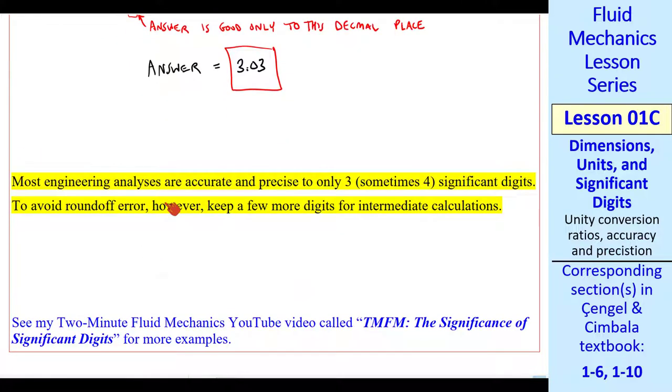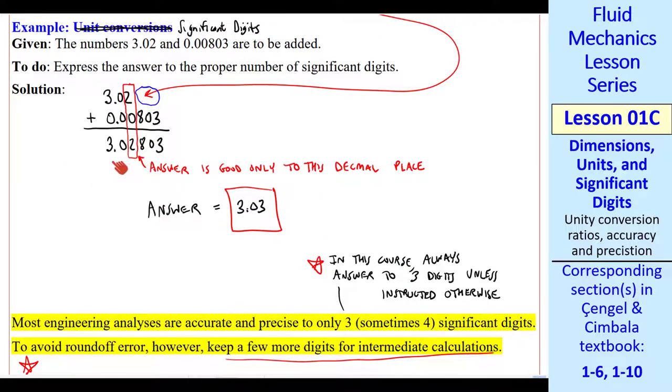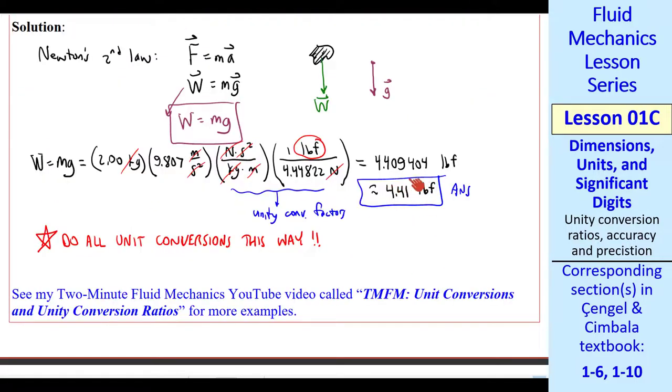A couple final comments. Most engineering analyses are accurate and precise to only 3, sometimes 4 significant digits. In this course, always answer to 3 significant digits unless instructed otherwise. And that's a good rule of thumb for just about everything you do in life. However, to avoid round-off error, always keep a few more digits for intermediate calculations. For example, if I was to put this number into another equation, I would include all these digits even though these are not significant. This avoids round-off error. I'd do the same here. I'd keep at least 5 of these digits in a subsequent problem. In other words, if this value is an intermediate variable in another equation, I would not put in this. I would put in this to avoid round-off error.